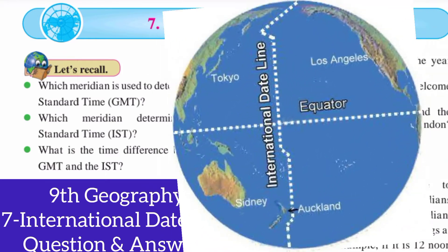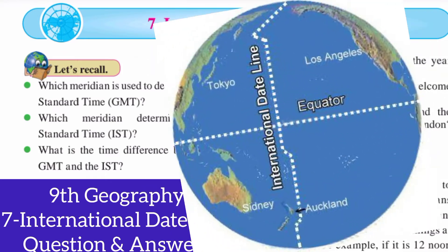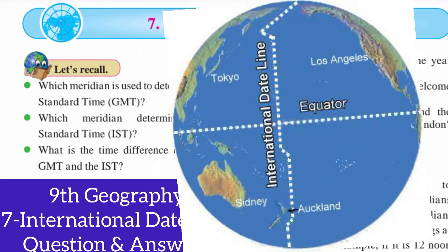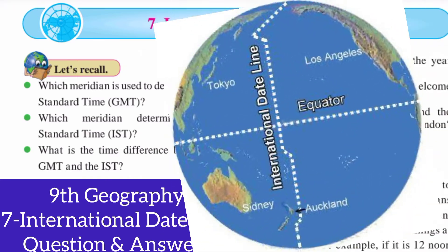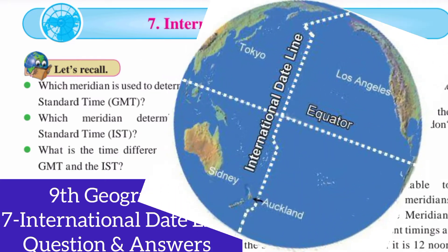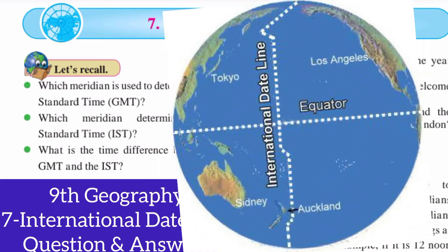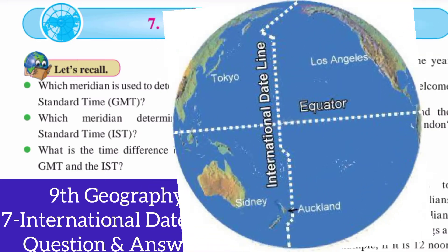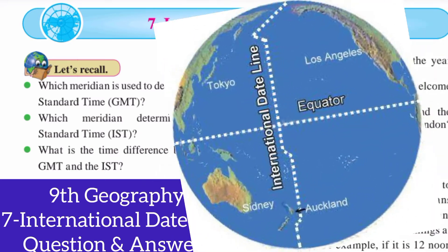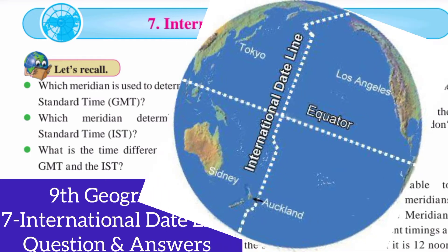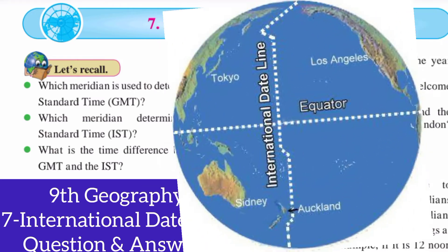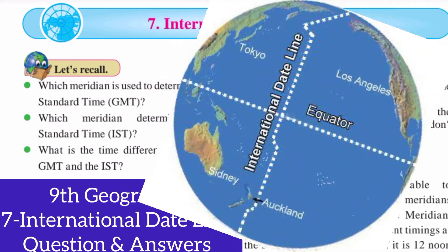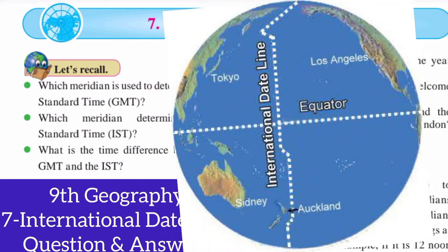When you cross the dateline, going to the East, the date increases by one day or 24 hours. In simple words, the International Dateline, also known as just the dateline, is an imaginary line on the surface of the Earth going from North to South in the Pacific Ocean. The date becomes one day later as one travels across it in a Western direction, and one day earlier as one travels across it in an Eastern direction.